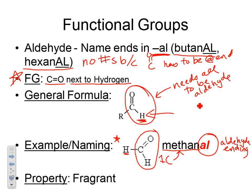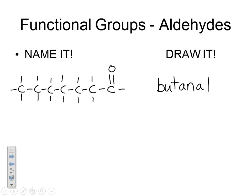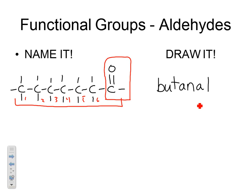Properties of aldehydes: they're fragrant and used as preservatives. Formaldehyde is an aldehyde — it has it right in the name. For the name-it example: the C=O next to an H identifies it as an aldehyde. Count all carbons including the functional group carbon: 1, 2, 3, 4, 5, 6, 7 — seven carbons total. The prefix for seven is hept-, and the aldehyde ending is -al, so this is heptanal.